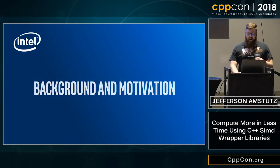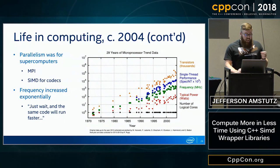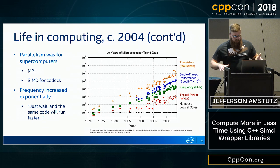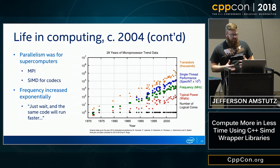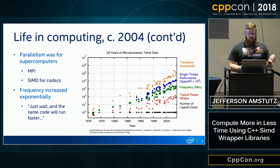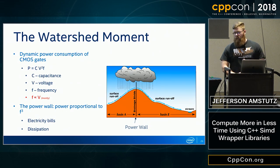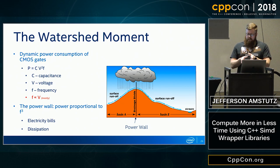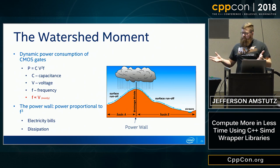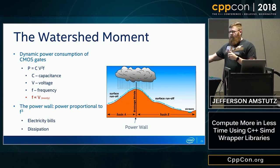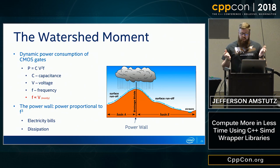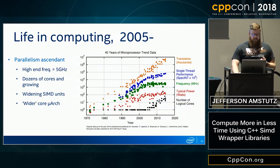A little background on why we need to care about SIMD. Life in computing circa 2004 meant CPU frequencies were just getting faster, transistors were increasing, and single-thread performance was going up. But a wall was hit where adding more transistors and pushing more electricity through the chip to clock faster was no longer giving good return on power investment. We call this the power wall — a watershed moment where we shifted from relying on single-threaded execution to needing to extract parallelism.